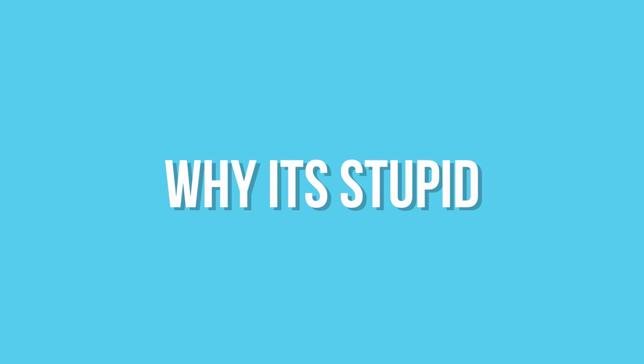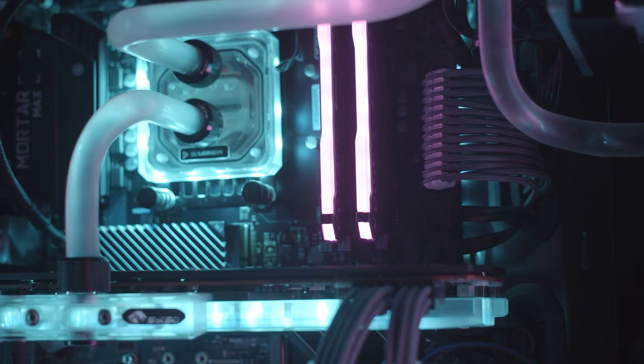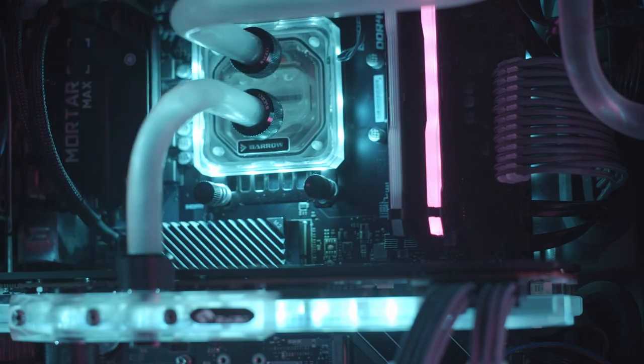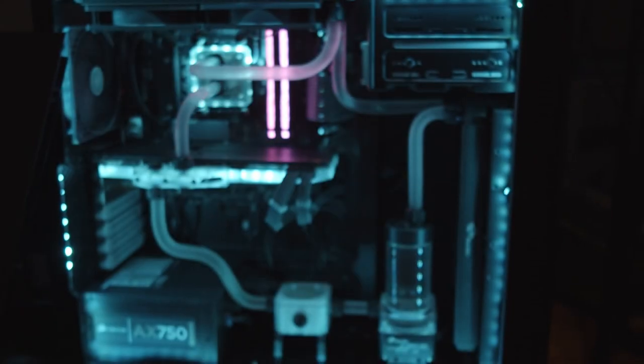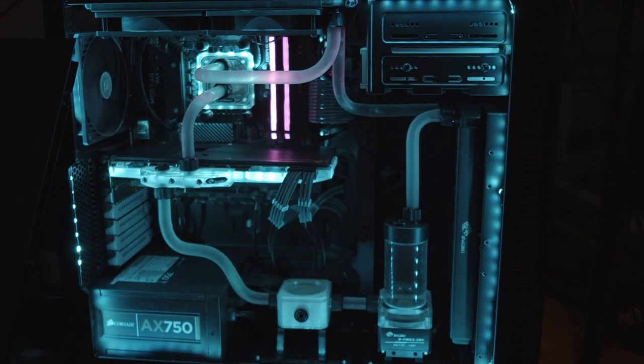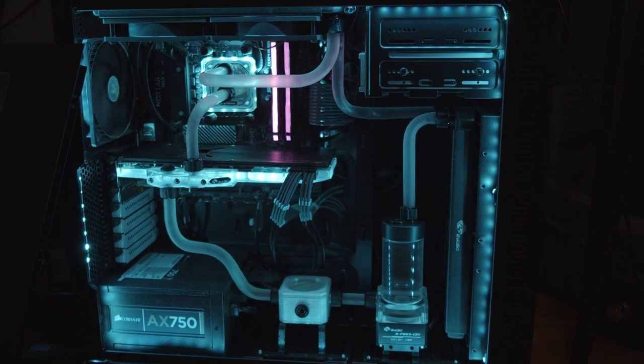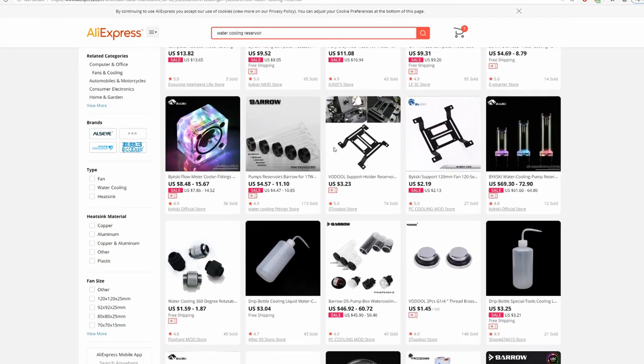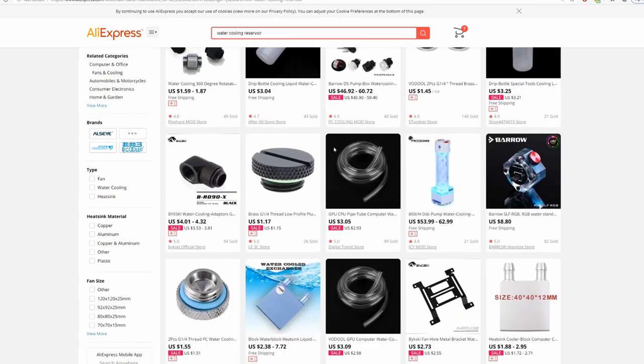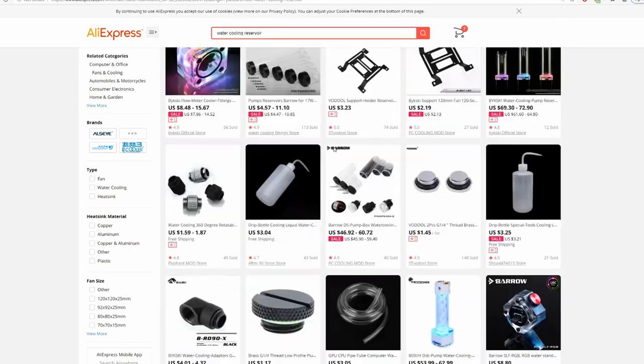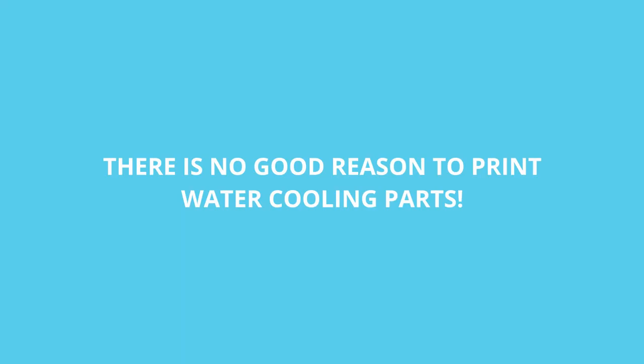And this is the main reason why I don't recommend using 3D printed parts. Water cooling is expensive, but most of that cost is sunk into the complex parts like the water blocks, radiators and pumps, which means the only parts that we are capable of actually printing are the parts that you can buy cheaply online, which will have a better quality finish, be much safer, and require zero effort. There really is no reason to print water cooling parts.